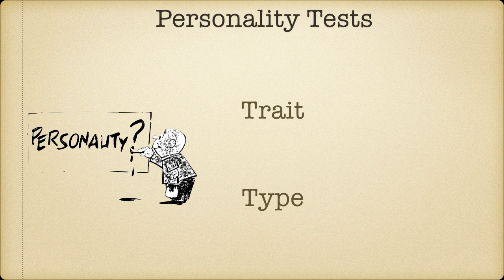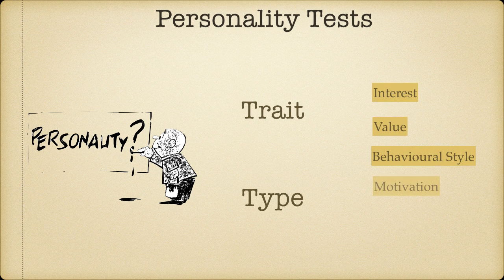We will go deeper into this classification with more examples in the subsequent modules of this course. There is another way of categorizing personality tests based on what exactly the test is measuring — for example, vocational interest tests, value tests, and motivational profiles. It is very important to understand the different bases of classification of psychometric tests, as administration and interpretation practices vary significantly depending upon the kind of test one is dealing with. Please take active part in the activities, ask questions in the forum, and do internet searches to learn more about the taxonomy of psychometric tests.